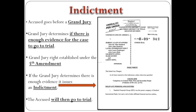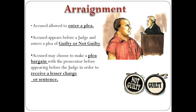If the grand jury determines that there's enough evidence, it issues an indictment, and from here the accused will go to trial. After an indictment has been given, an arraignment will happen where the accused is allowed to enter a plea. The accused appears before a judge and enters a plea of guilty or not guilty. The accused may also choose to make a plea bargain with the prosecutor before appearing before the judge in order to receive a lesser charge or sentence. Often times, plea bargains are made.